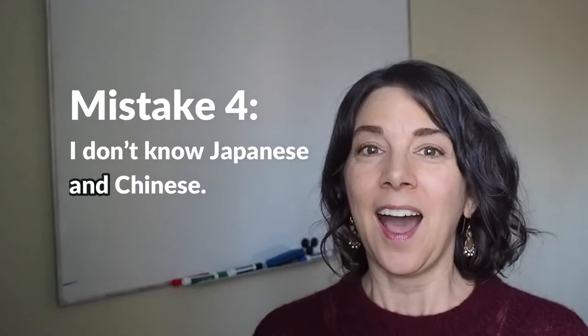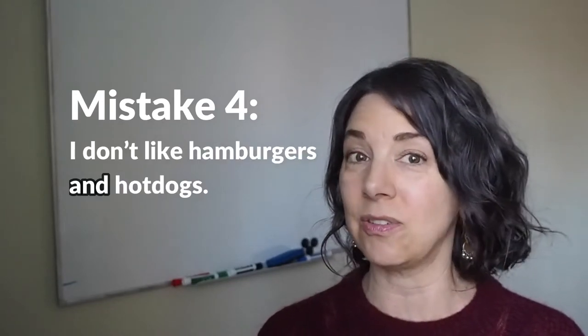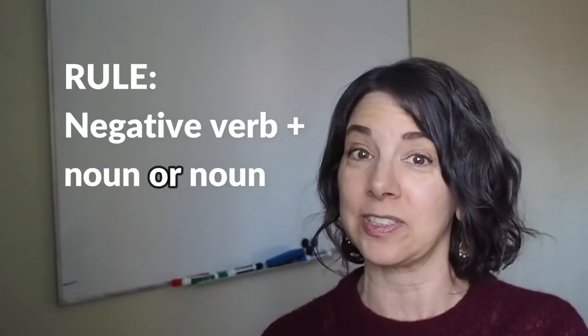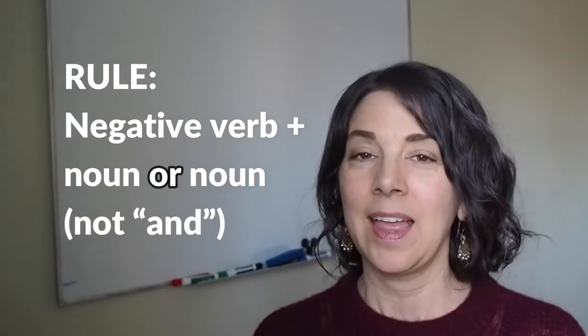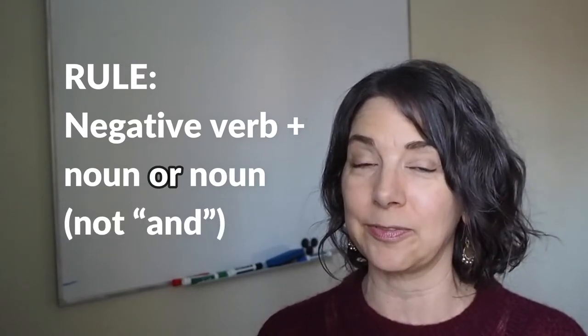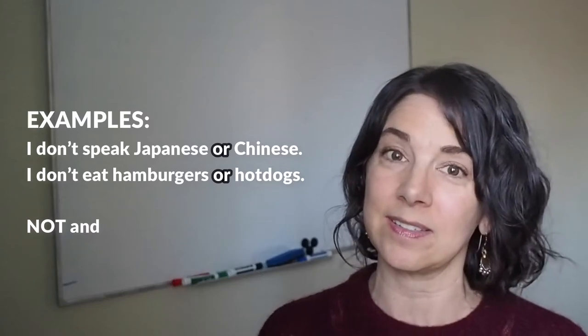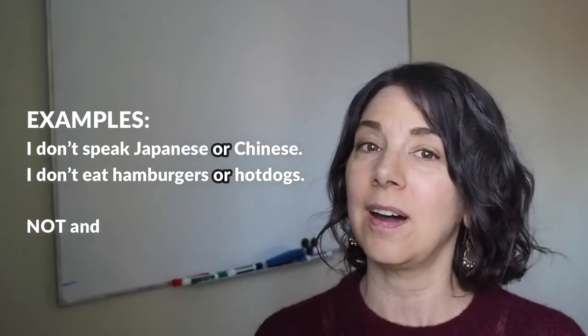Number four: I don't know Japanese and Chinese. I don't like hamburgers and hot dogs. So when you have a negative verb and you have some nouns that come after it, you're going to use OR, not AND. This is because the verb is negative. Let's look at the correct form. I don't speak Japanese or Chinese. I don't eat hamburgers or hot dogs. This isn't a big deal if you make this mistake, but it's kind of an easy one to learn. And it's also very common to use a negative verb and some nouns. So it's a good rule for you to learn because it is common and it's also not very difficult.